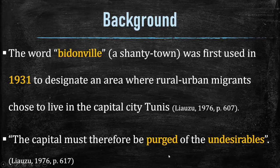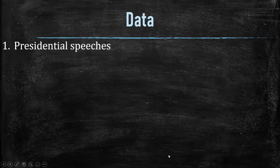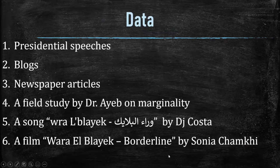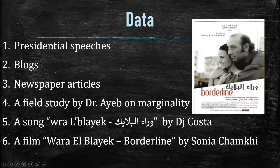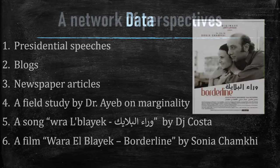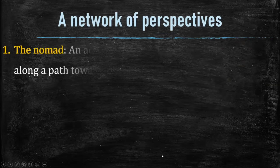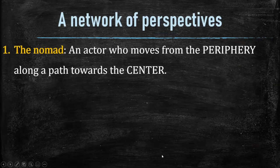I collected the data from these sources, and what I found is that there is a network of perspectives. There are three actors in the process of mobility and the space.